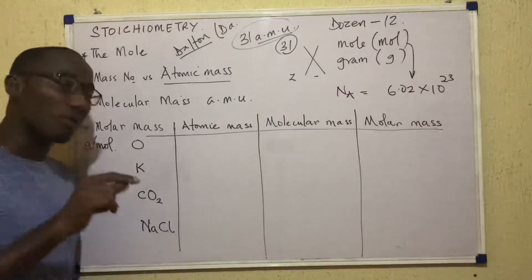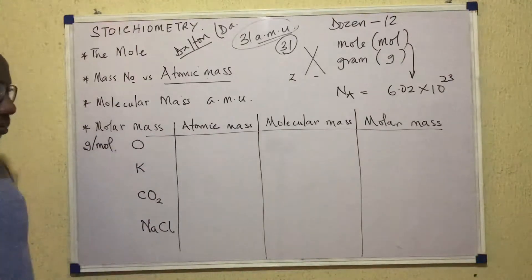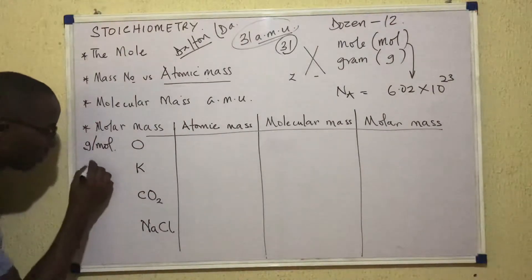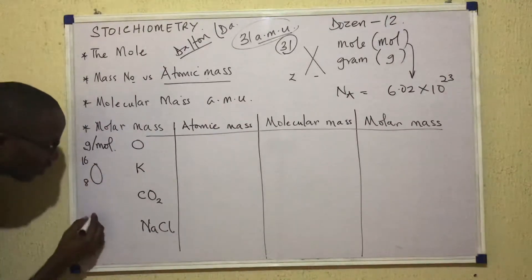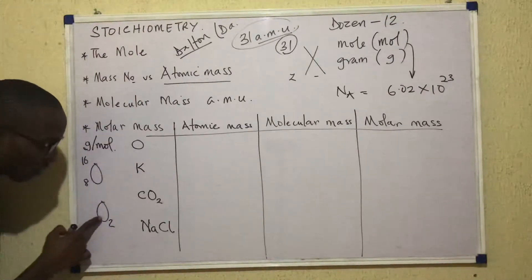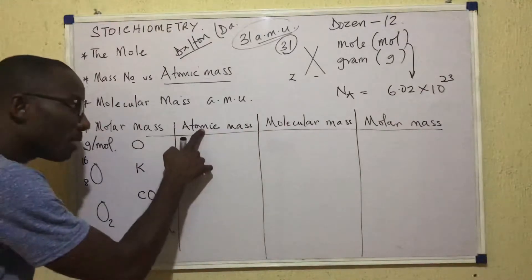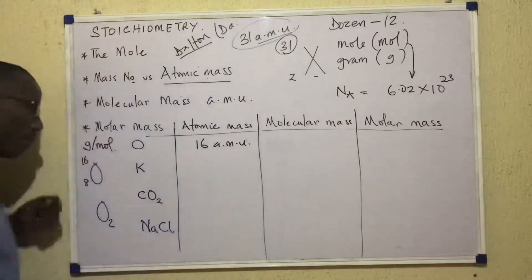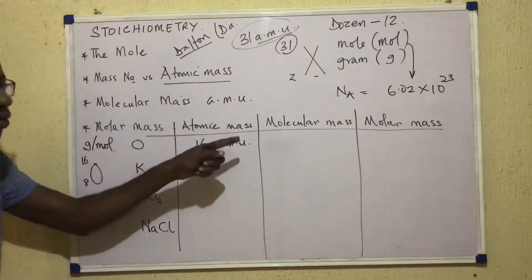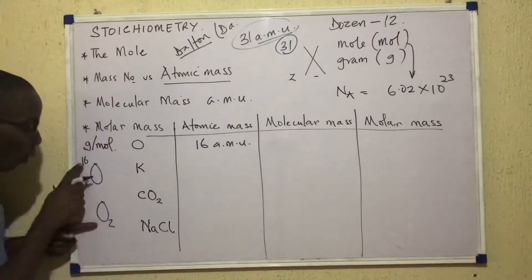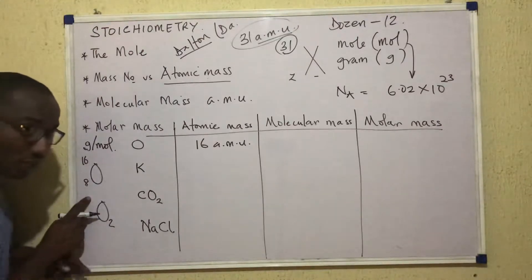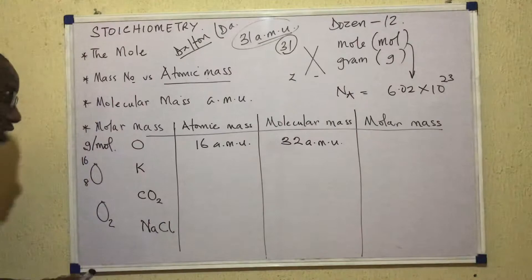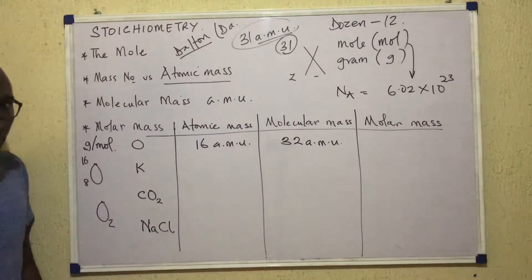Let's use a table to clarify. Take oxygen, represented as 16, 8. Oxygen can exist as atoms and as molecules. The atomic mass — the mass of a single atom of oxygen — would be 16 AMU. For the molecular mass, a molecule of oxygen is O₂, so if O is 16, O₂ would be 32, and the unit remains AMU, since a molecule of oxygen is nothing but two atoms. Then for potassium, written as 39, 19, an atom of potassium will have a mass of 39 AMU.